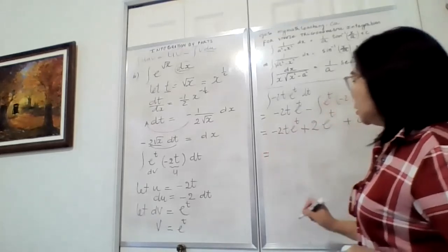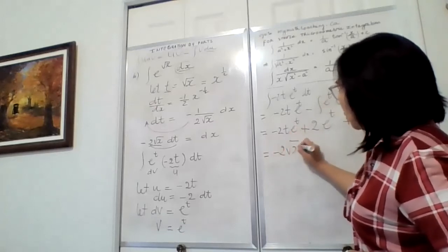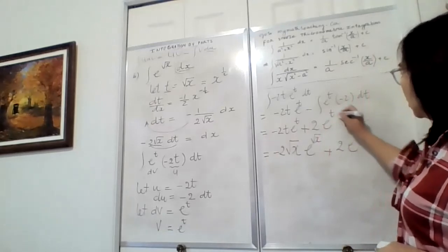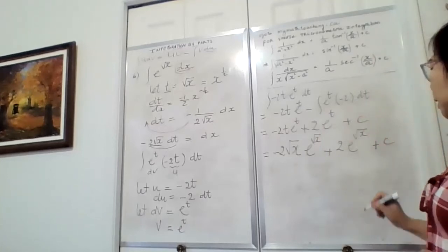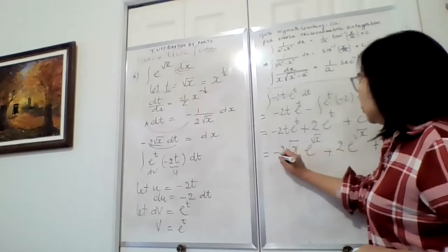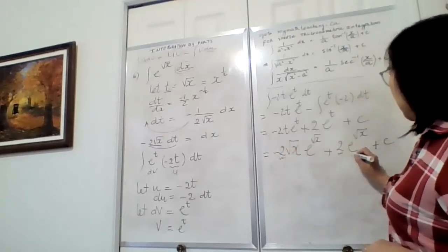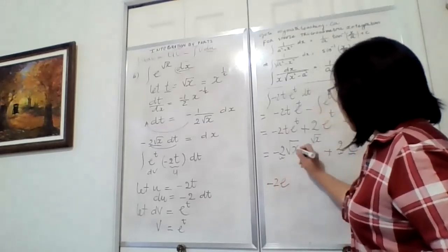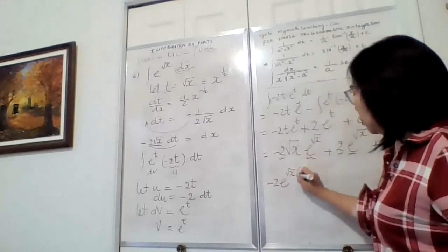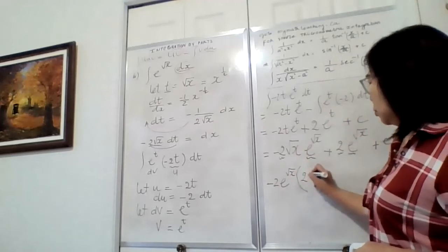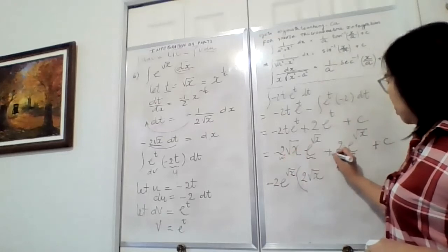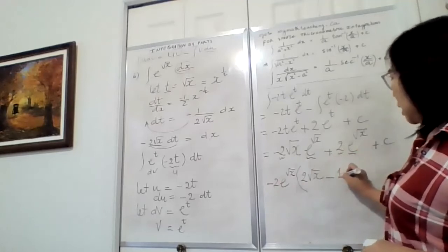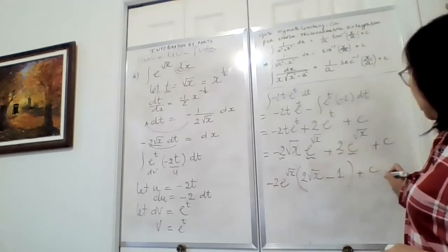Now all we have to do is substitute back: t equals √x. So we have −2√x·e^(√x) plus 2e^(√x) plus C. I can factor out the common factor −2e^(√x) from both terms. Inside the bracket: √x minus 1, with a sign adjustment (minus times minus is plus) giving −2e^(√x)(√x − 1) plus C. And that's how you integrate this last complicated function.